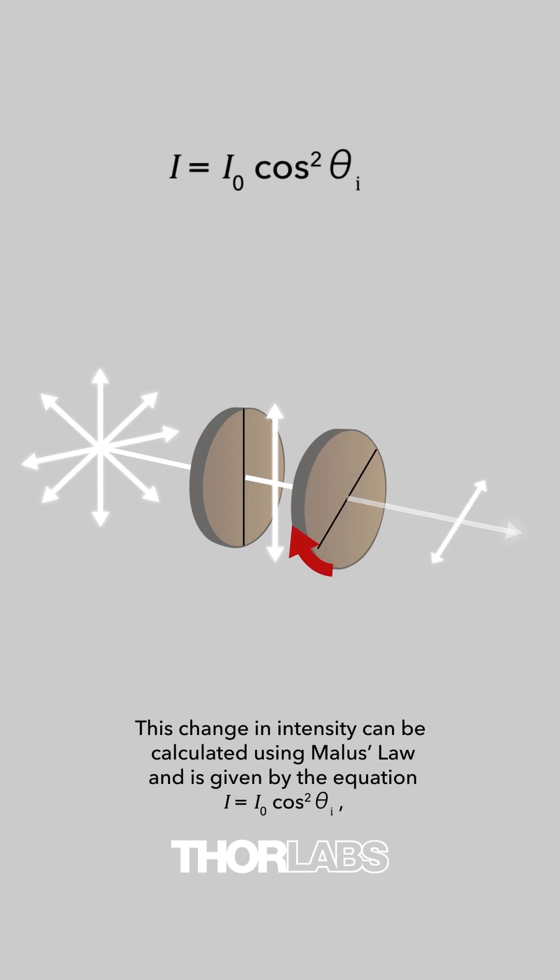This change in intensity can be calculated using Malus's law and is given by the equation I equals I₀ times the cosine squared of theta i.